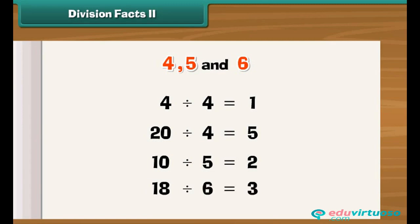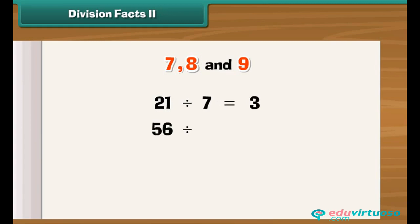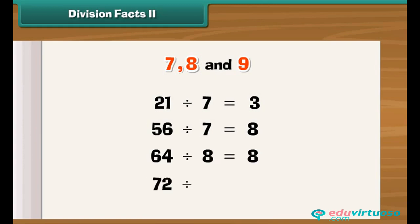Now it is time to know the division facts of seven, eight, and nine. Twenty-one divided by seven is three. Fifty-six divided by seven is eight. Sixty-four divided by eight is eight. Seventy-two divided by nine is eight.